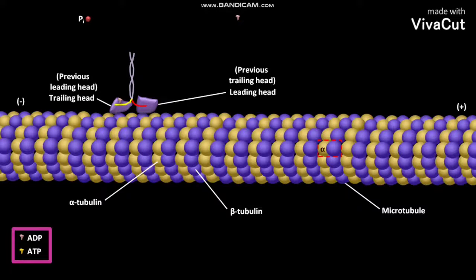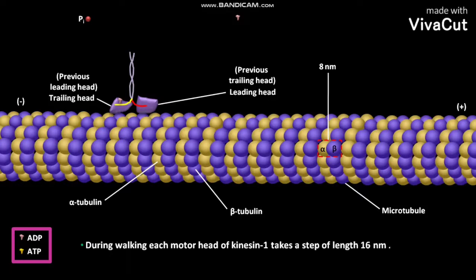The dimer of alpha tubulin subunit and beta tubulin subunit in a protofilament of a microtubule has a length of 8nm. So, during working, each motor head of kinesin-1 takes a step of length 16nm.